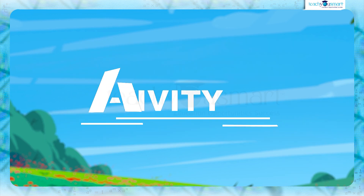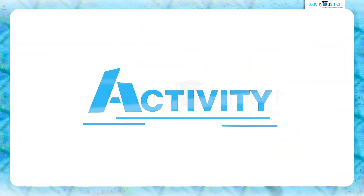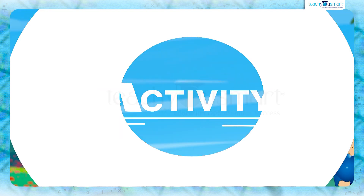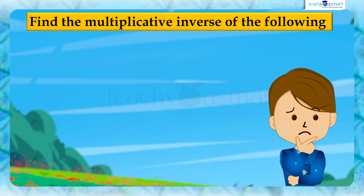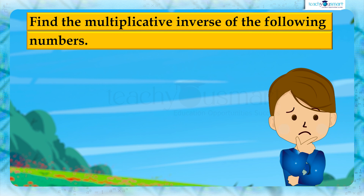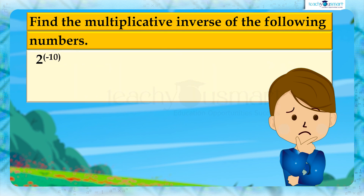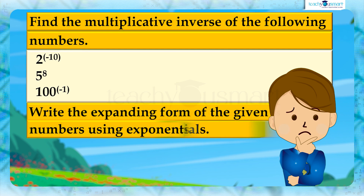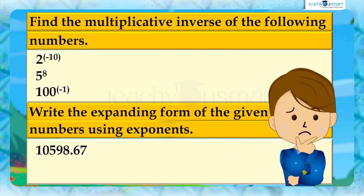Before winding up, let's check how much you understood by doing an activity. Find the multiplicative inverse of the following numbers: 2 raised to minus 10, 5 raised to 8, and 100 raised to minus 1. Next, write the expanded form of the given numbers using exponents: first, 10,598.67; second, 895.3012.